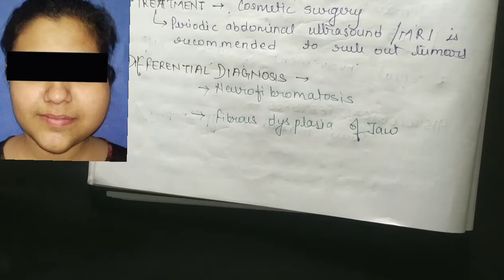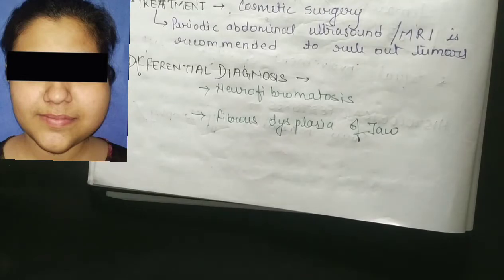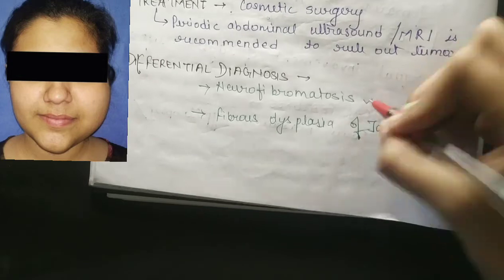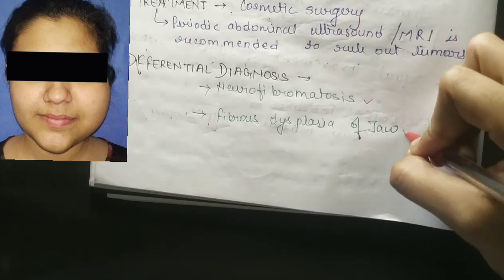MRI is recommended because some tumours can develop in this condition. MRI gives a clearer picture of which side and at what position tumour development has occurred, to guide what kind of cosmetic surgery needs to be provided. The differential diagnosis includes neurofibromatosis and fibrous dysplasia.